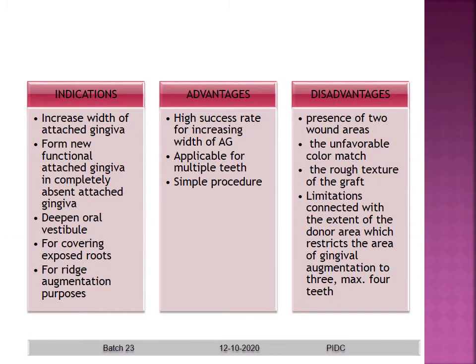Indications for free gingival autograft: increasing width of attached gingiva, forming new functional attached gingiva in a completely absent gingival area, deepening the oral vestibule, covering exposed roots, and ridge augmentation purposes. Advantages: high success rate for increasing width of attached gingiva, applicable for multiple teeth, and simple procedure. Disadvantages: presence of two wound areas, unfavorable color match, rough texture of the gingiva, and limitations in donor area extent, restricting augmentation to three or maximum four teeth.